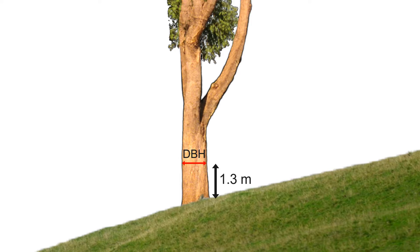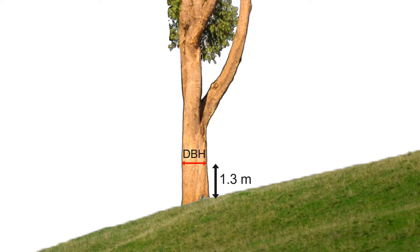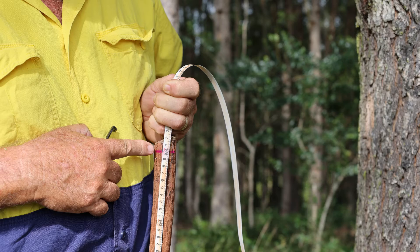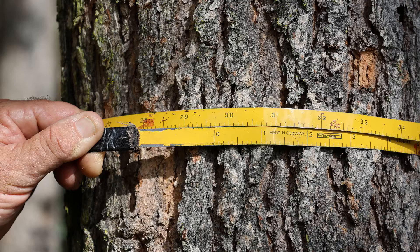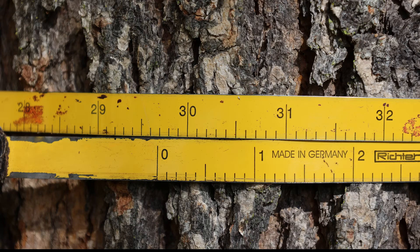The DBH of a tree stem is measured at 1.3 metres above ground level on the high side of the tree. This is known as breast height. To ensure you are measuring the diameter at the correct height, you can use a stick marked at 1.3 metres or measure that height on your body and take the diameter reading at that point for each tree. Then simply wrap the diameter tape firmly around the tree and read the diameter where the tape overlaps the zero mark, to the nearest 0.1 centimetre.